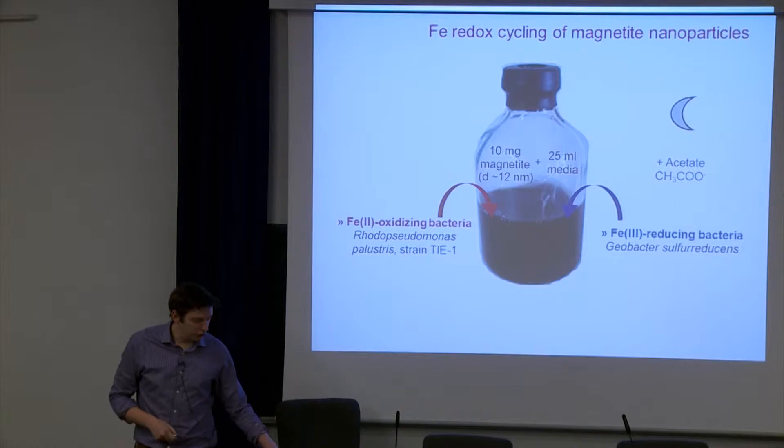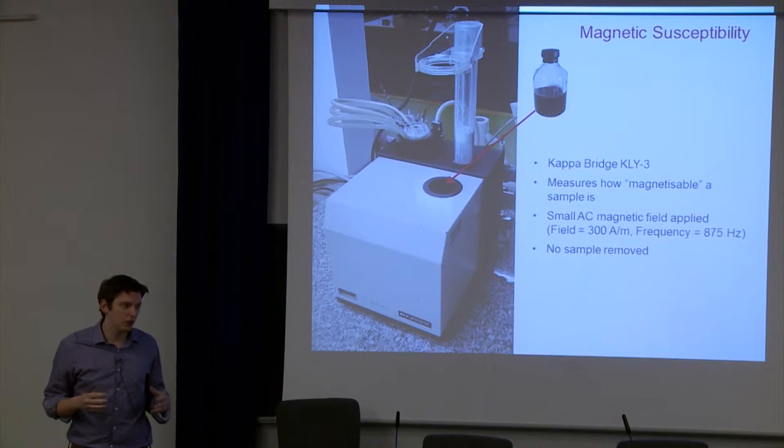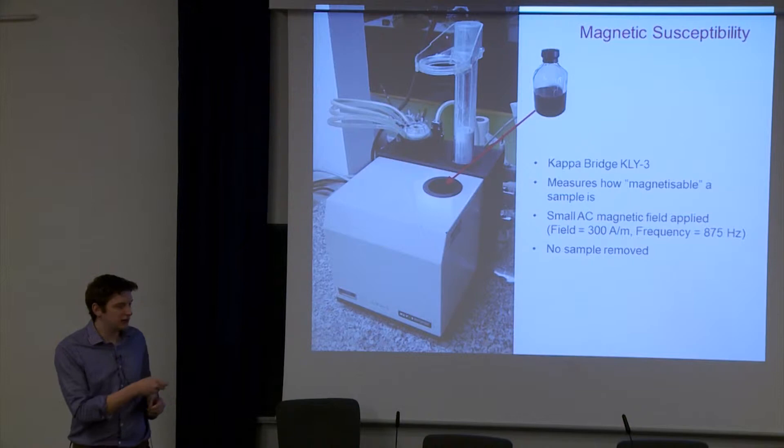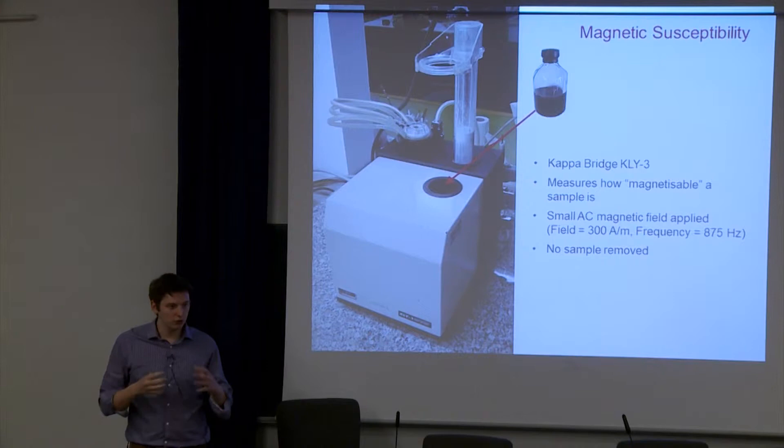I like putting this slide on because this is the instrument I use. It's magnetic susceptibility, a measure of how magnetic or magnetizable a sample is. It applies a very weak magnetic field. The reason I like this slide is because the bottle, the culture, fits very nicely into the sampling tube. No sample needs to be removed at any point during measurement. You've got quite an isolated system. This is useful compared to other techniques where you'd require sample extraction. We can measure the changing magnetic susceptibility over time.